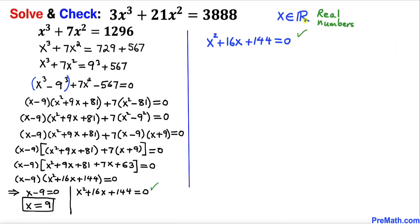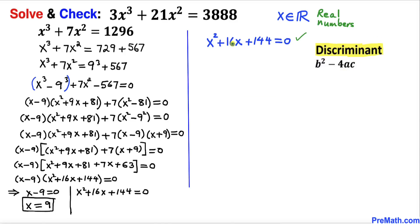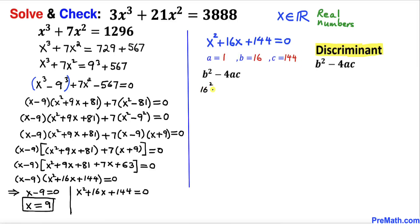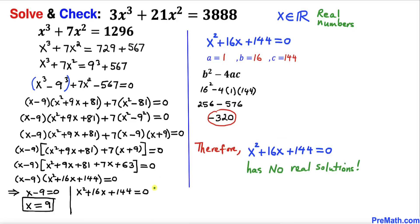Now let's focus on the other quadratic equation x² + 16x + 144 = 0. Recalling the quadratic formula, we focus on the discriminant b² − 4ac, where a = 1, b = 16, and c = 144. That gives us 16² − 4(1)(144) = 256 − 576 = −320. Since the discriminant is negative, this quadratic has no real solutions.